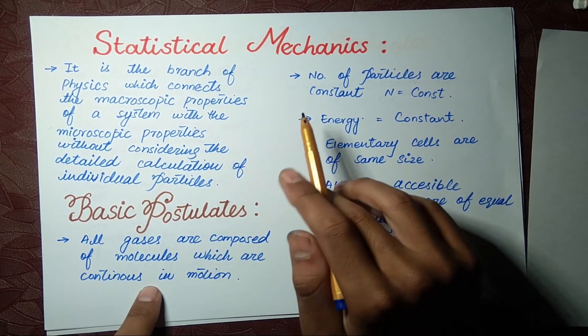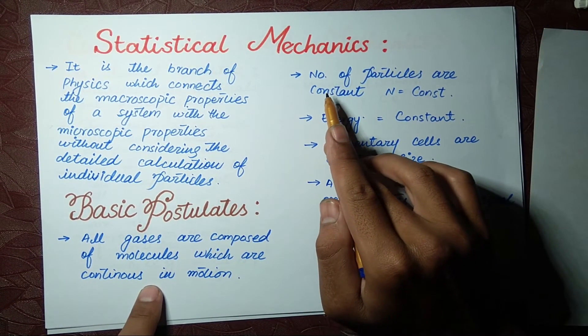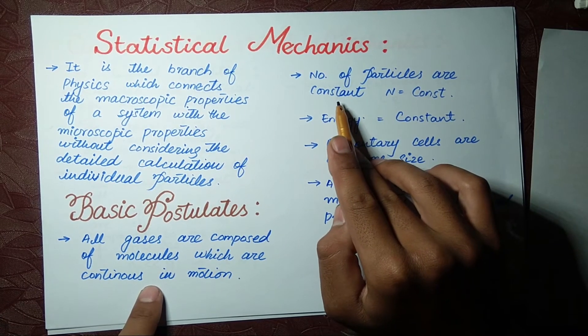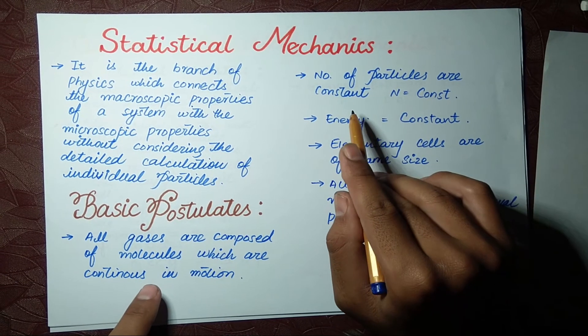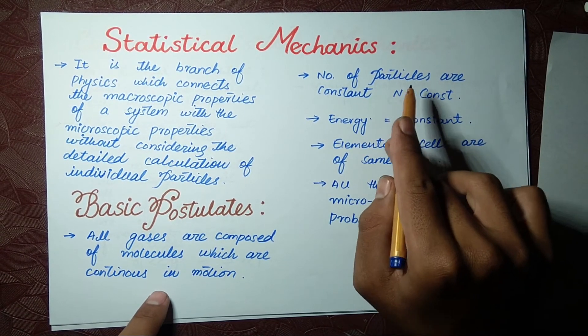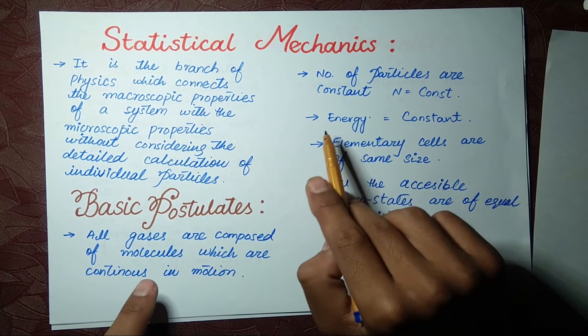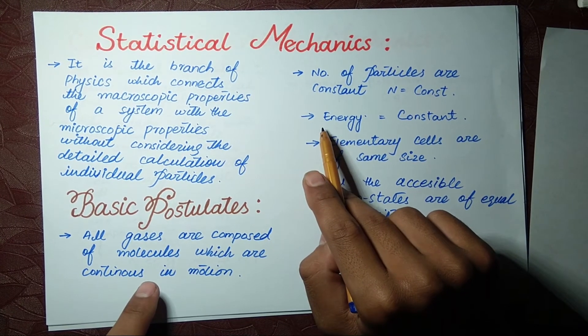So all gases are composed of molecules which are continuous in motion. Number two: number of particles are constant. When you have a system with constant volume, then the number of particles are constant and energy will be constant.